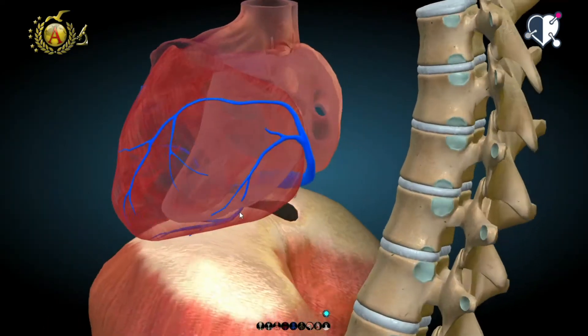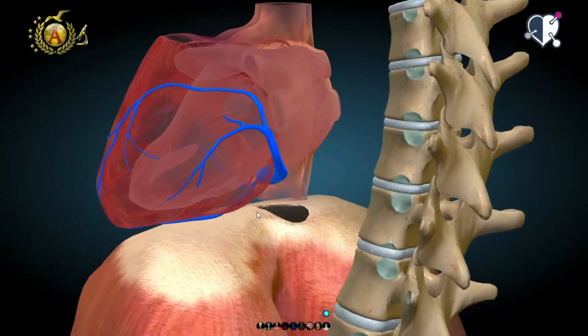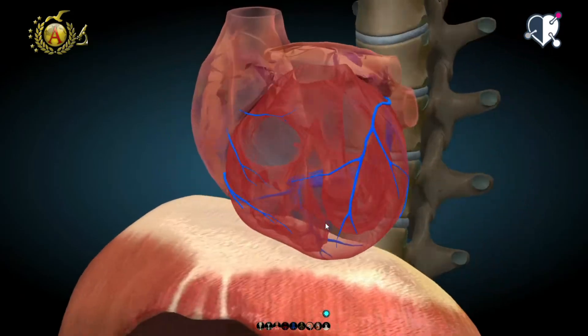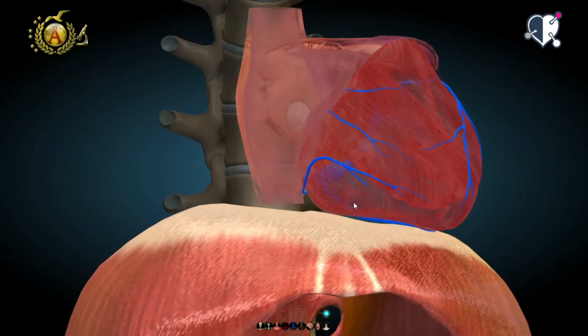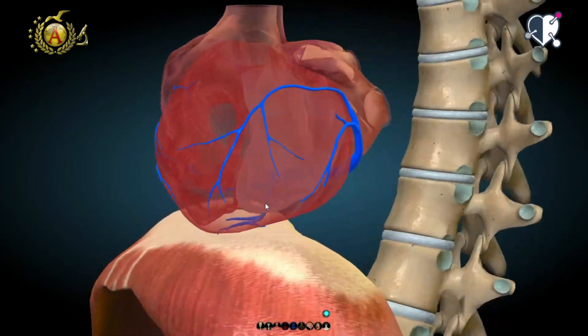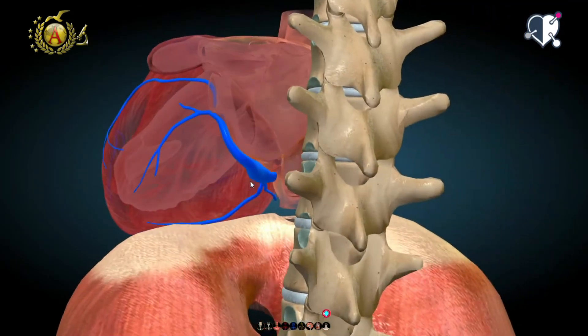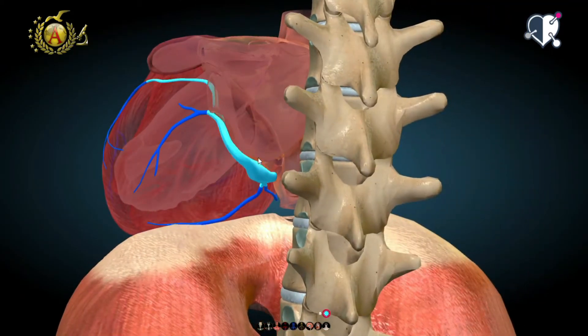With a wider network, the coronary veins all merge into the coronary sinus, a big vein that increases its caliber as it goes towards the posterior part.